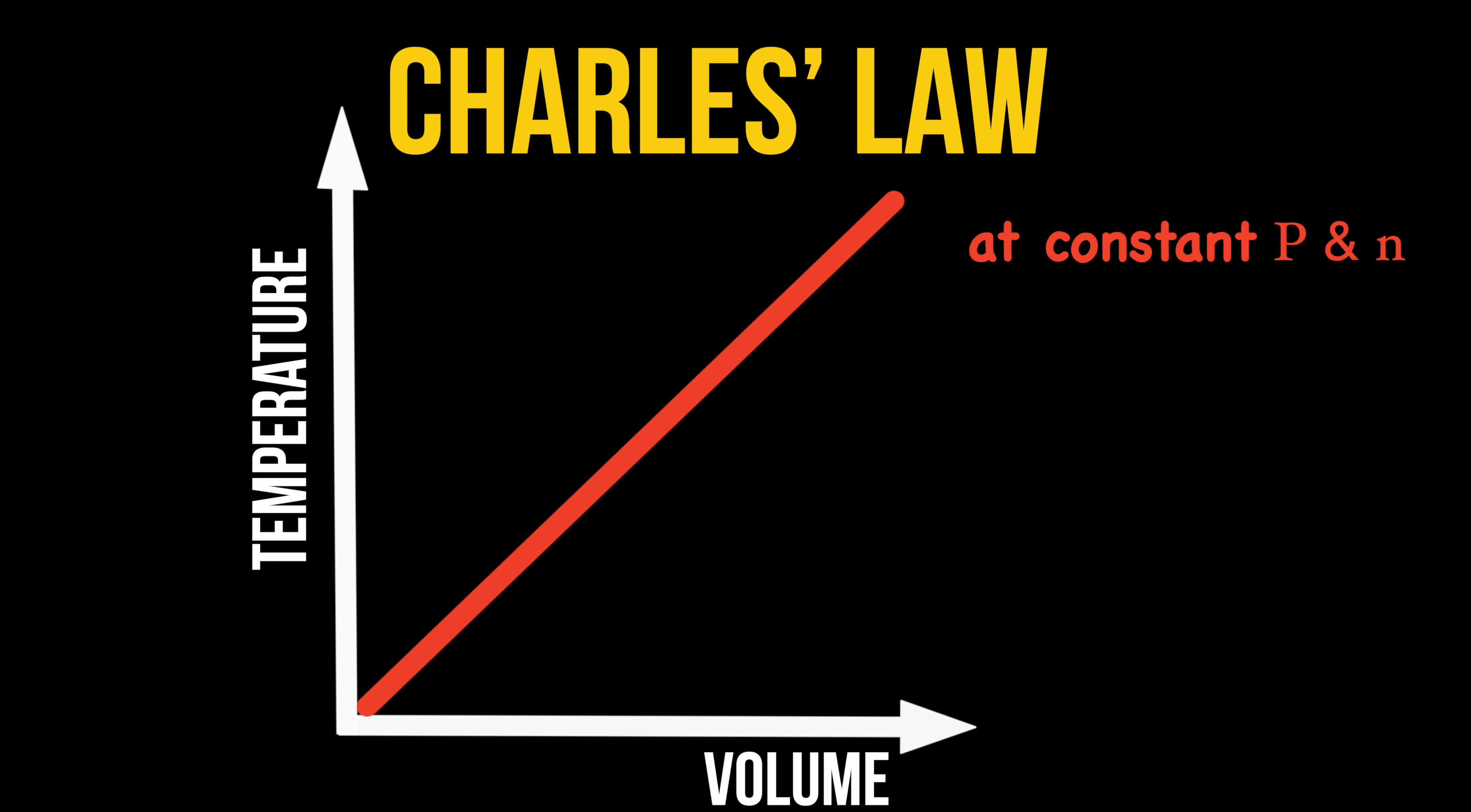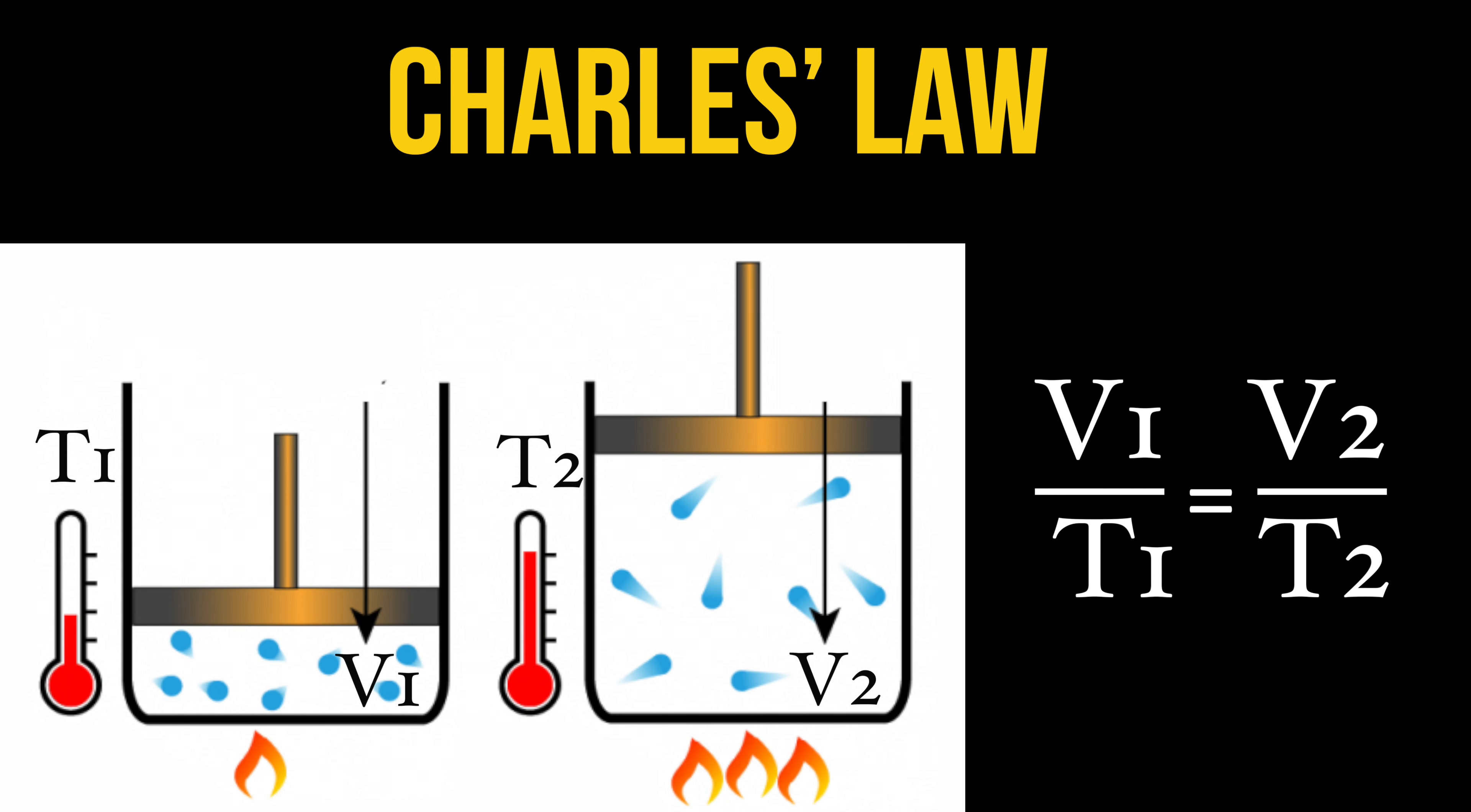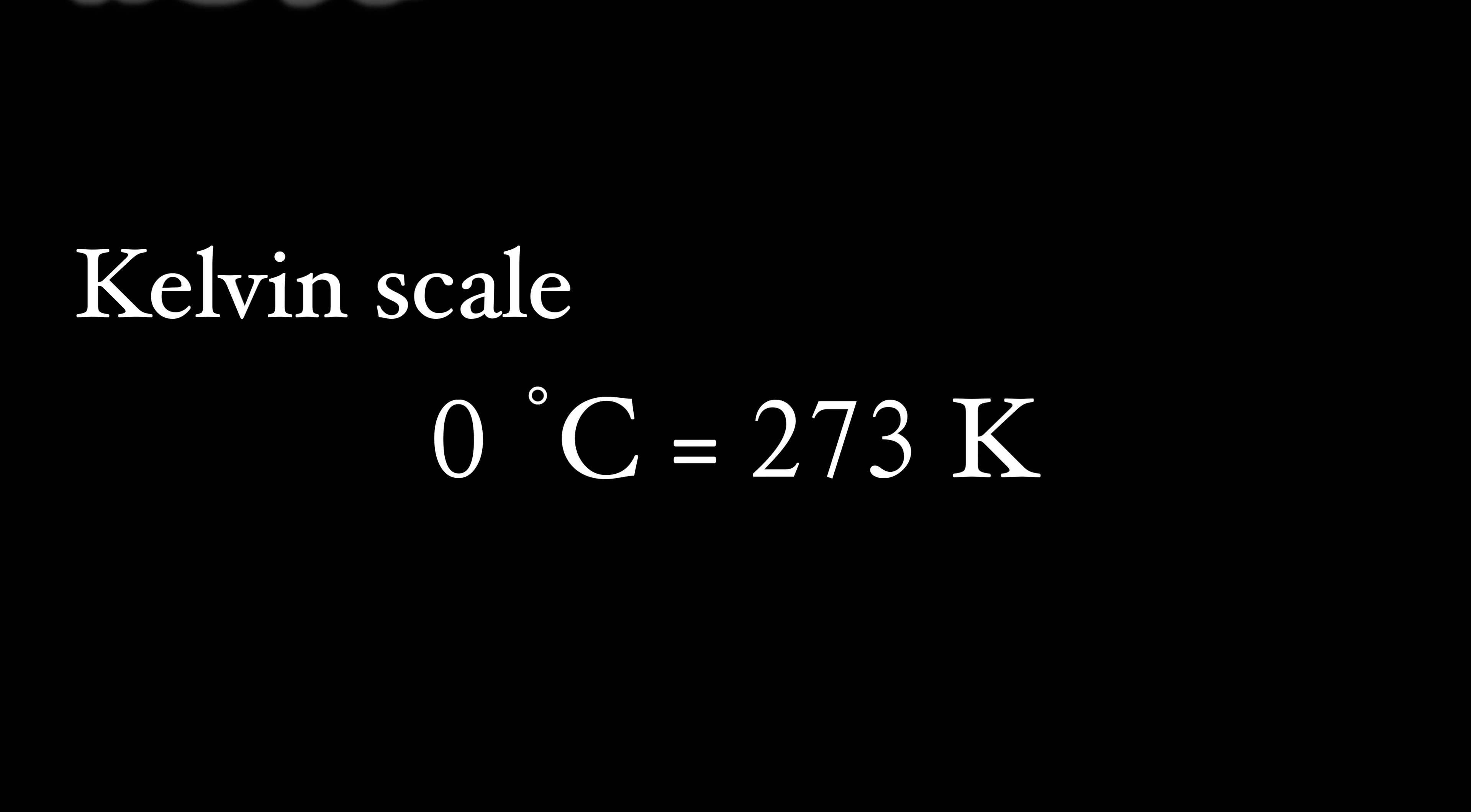Charles' law states that the volume of gas increases linearly with the temperature if the pressure and the amount of gas is kept constant. The Charles' law can be expressed as follows. Please note that the temperature is measured on the Kelvin scale. Zero degrees Celsius corresponds to 273 degrees Kelvin.